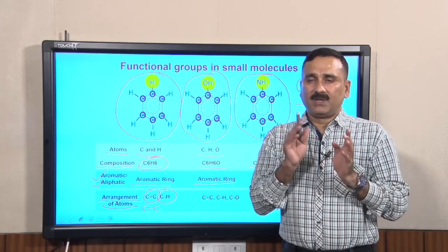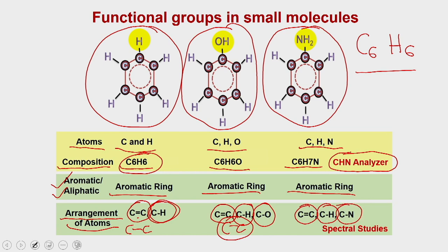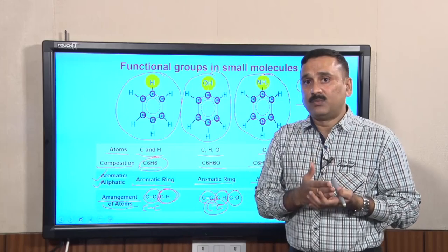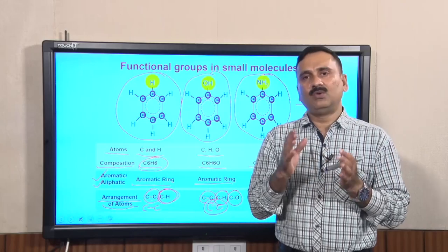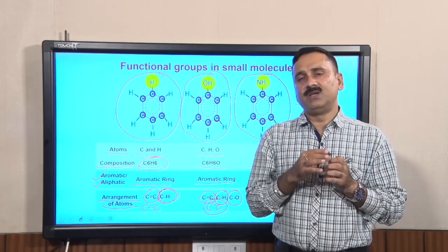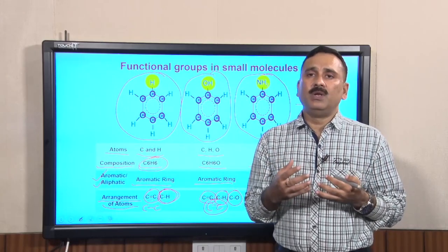For example, in benzene you have carbon double bonds and carbon-single-H bonds. In phenol you have carbon double bonds, carbon-to-hydrogen bonds, carbon-to-oxygen bonds, and carbon-carbon single bonds. In aniline you have carbon double bonds, carbon-to-hydrogen bonds, and carbon-to-nitrogen bonds. Let us revise the steps: first, do CHN analysis to get the composition and deduce the empirical formula. Once you have the empirical formula, you can predict whether the compound is going to have a functional group or not.